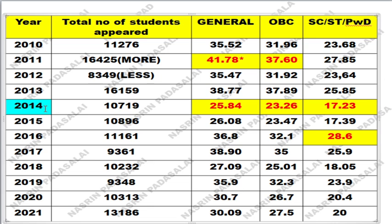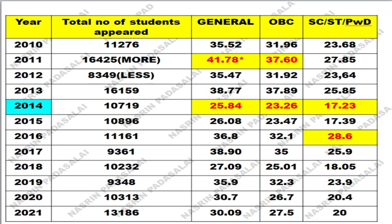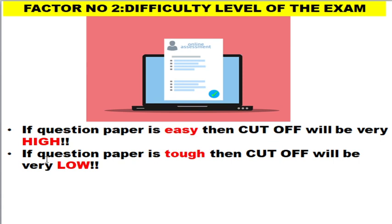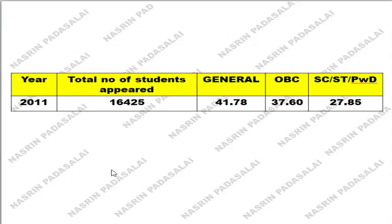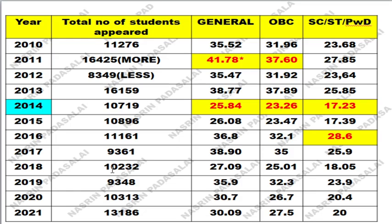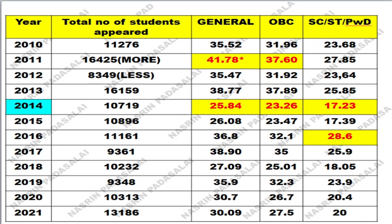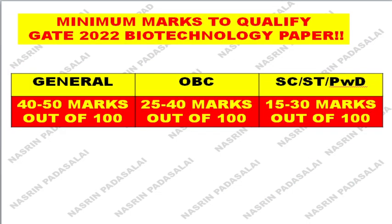In 2014, all three categories reported their lowest ever cutoff marks. That exam was conducted by IIT Kharagpur. This year also, IIT Kharagpur is conducting the examination. As mentioned, if the question paper is very tough, the cutoff will be very low — which was the case in 2014. IIT Kharagpur sets the toughest question papers, so this year's paper may also be tough, which means the cutoff could be lower. This is very important and helpful for your preparation.